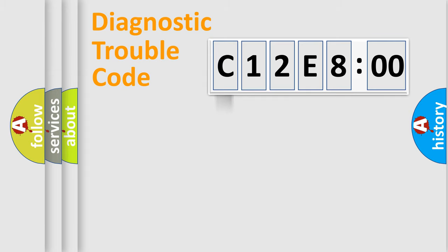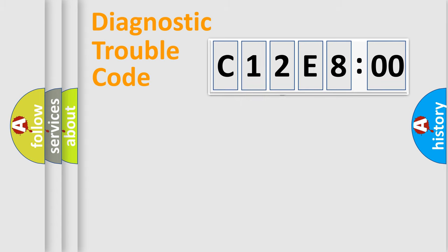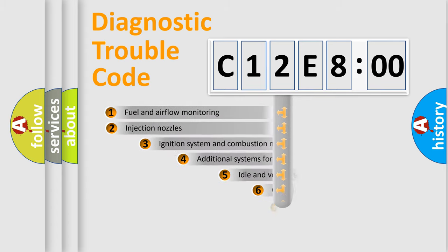Powertrain, Body, Chassis, Network. This distribution is defined in the first character code. If the second character is expressed as zero, it is a standardized error. In the case of numbers 1, 2, 3, it is a manufacturer-specific error.